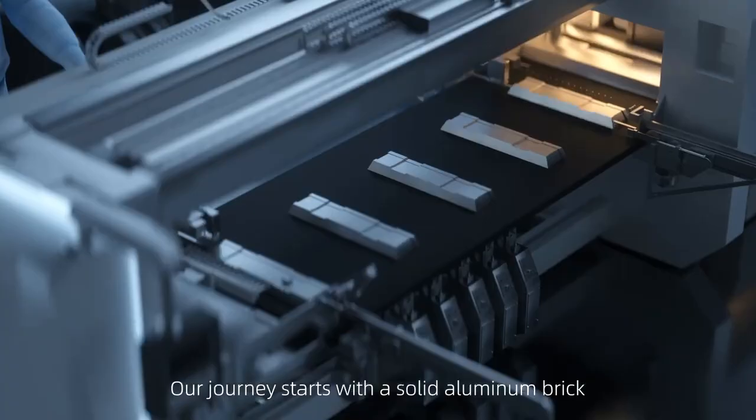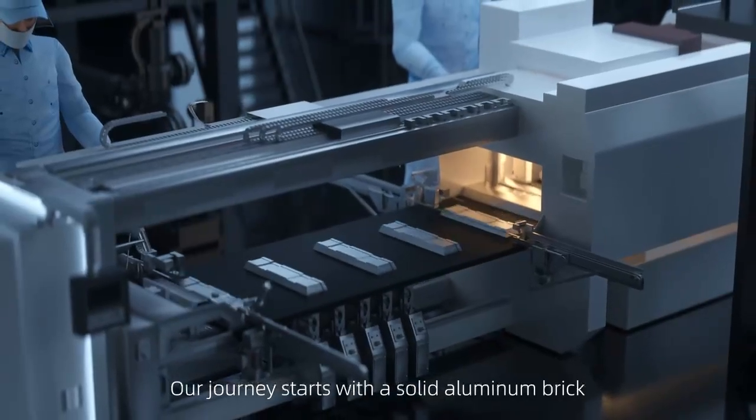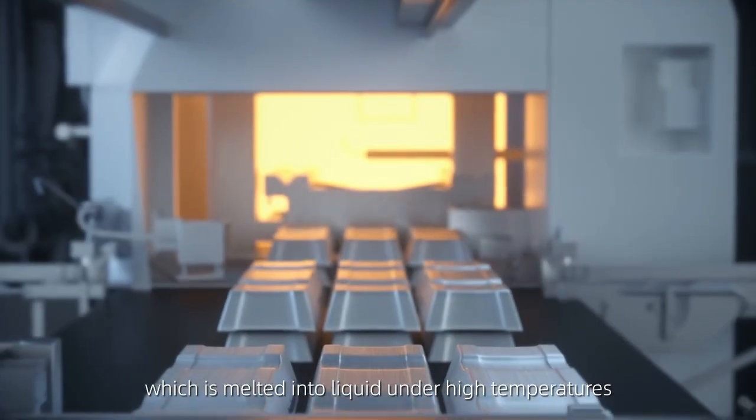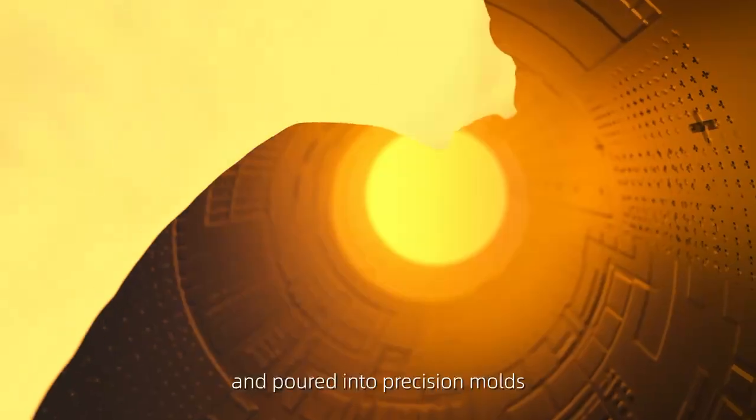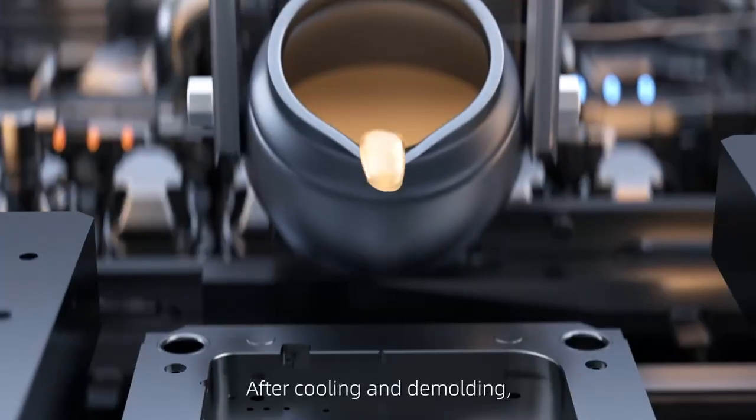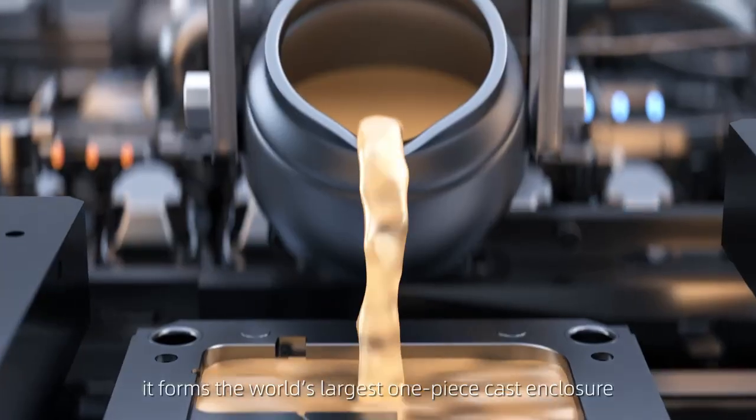Our journey starts with a solid aluminum brick, which is melted into liquid under high temperatures and poured into precision molds. After cooling and demolding, it forms the world's largest one-piece cast enclosure.